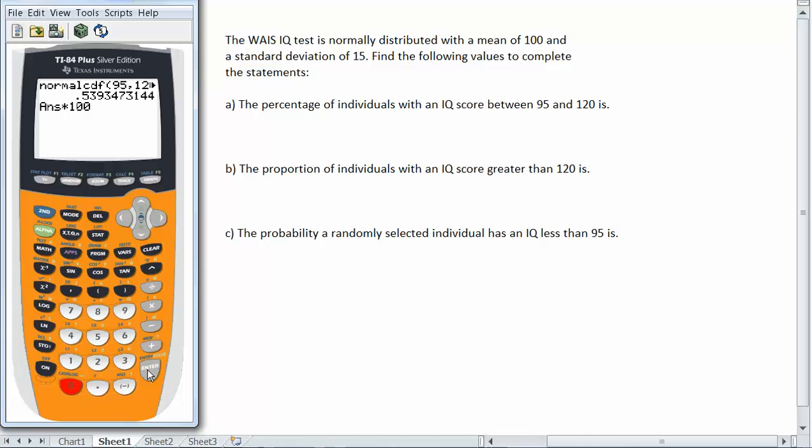So if I had it rounded to four digits to begin with, my percentage will be 53.93%. So the percentage of individuals with an IQ score between 95 and 120 is 53.93%.